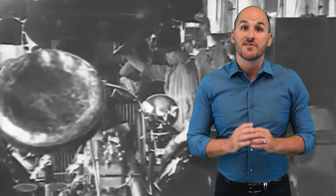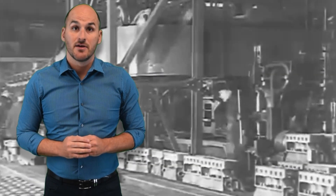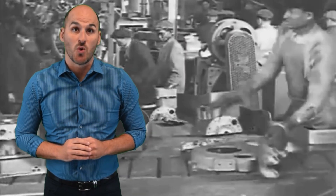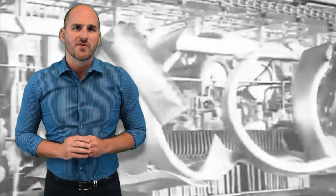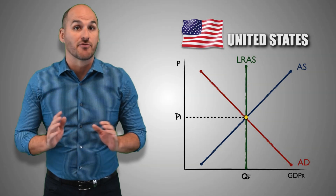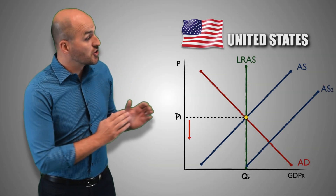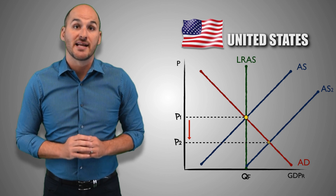In 1913, Henry Ford incorporated the assembly line into the production process in his automobile plants, dramatically increasing the productivity of his labor force. Within a decade, the assembly line was being used in factories across the country, producing home appliances and other popular goods and services in massive numbers throughout the 1920s. As a result of this technological innovation, domestic firms produced greater quantities of real GDP output at every price level, leading to an increase in short-run aggregate supply throughout the United States economy.